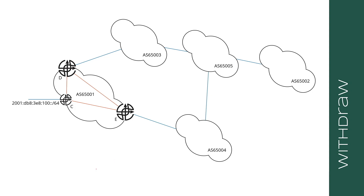There is a timer in BGP called the Min Route Advertisement Interval. This is primarily designed much like an SPF or LSU delay timer in a link state protocol. It's a timer that creates a little bit of hysteresis in the network to slow down the updates so that you won't get so many updates from a single failure.